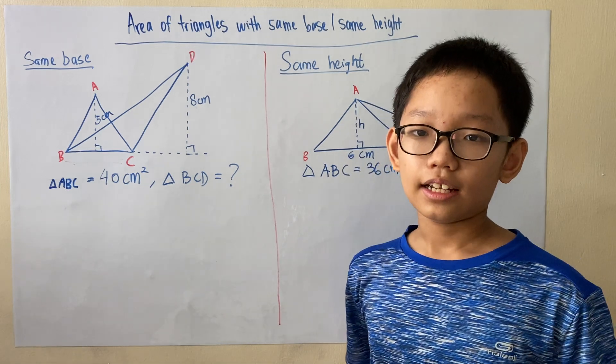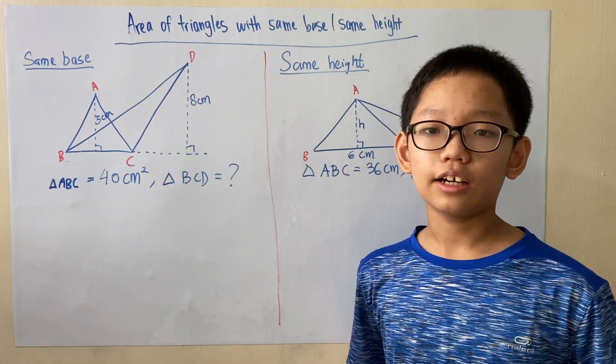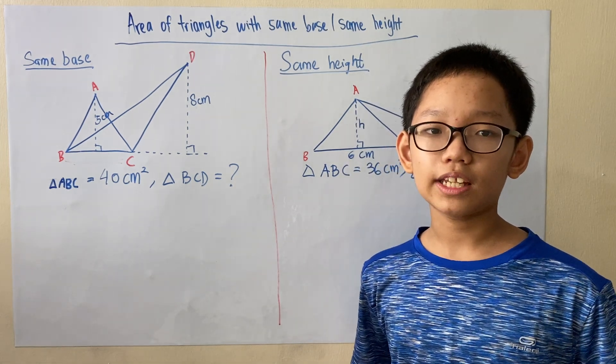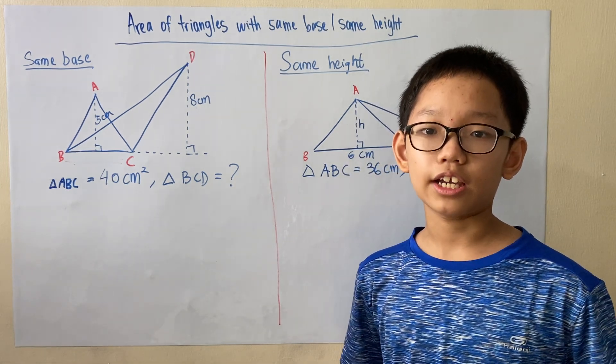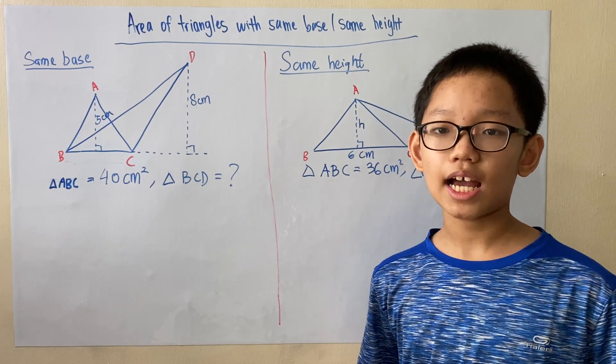So before we start, I want to remind all of you that the formula for finding the area of a triangle is half times base times height.